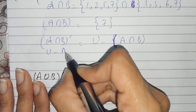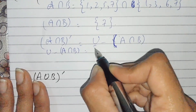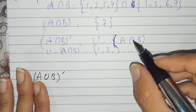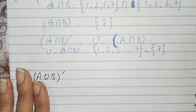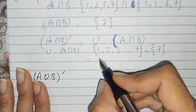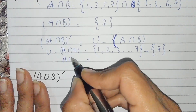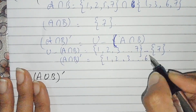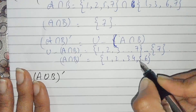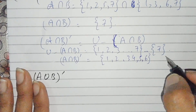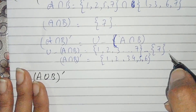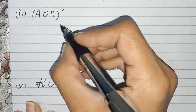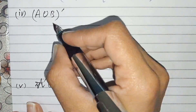(A intersection B) complement means U minus (A intersection B). U is {1,2,3,4,5,6,7} and A intersection B is {7}. So (A intersection B) complement is {1,2,3,4,5,6} — only 7 will not come because 7 is present in A intersection B. This is the answer to part three.